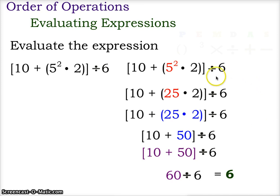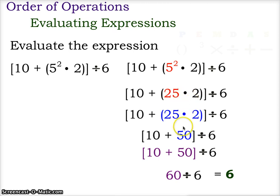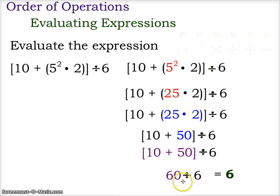So we started with the innermost grouping symbol — 5 squared times 2 — doing the exponent first to get 25. Then 25 times 2 inside the grouping symbol gives us 50. Then 10 plus 50 gives us 60, and 60 divided by 6 gives us 6. This was three more examples of order of operations for Algebra 1.